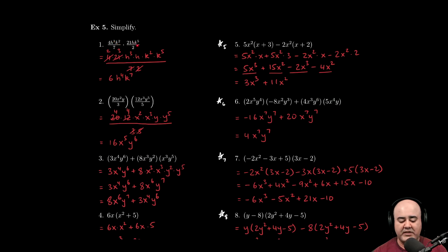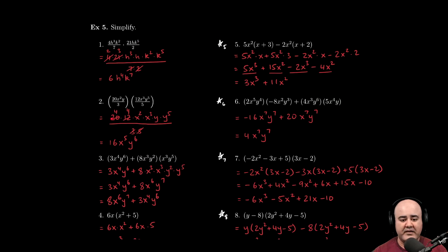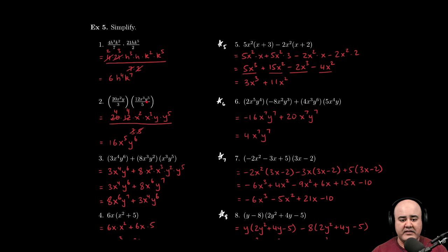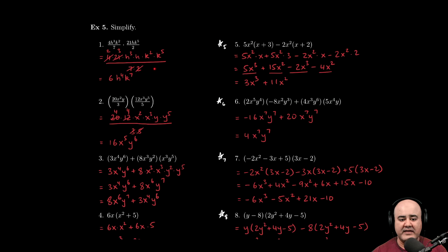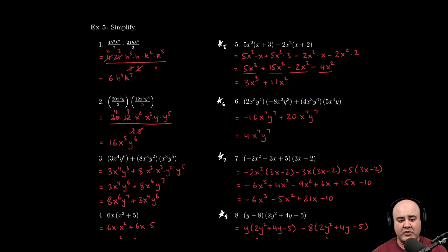And then finally, we have k squared times k to the 5th. Bases are same and we're multiplying, so we add the exponents. We get k to the 7th. Next. Here, I did this here, but I didn't mention it, and I hope that it was obvious. What I started off by doing was writing all the like terms together. So I wrote the numbers by themselves, then I wrote the H's by themselves, and then I wrote the K's by themselves, and then I just canceled out the stuff that I could or divided out the common factors.